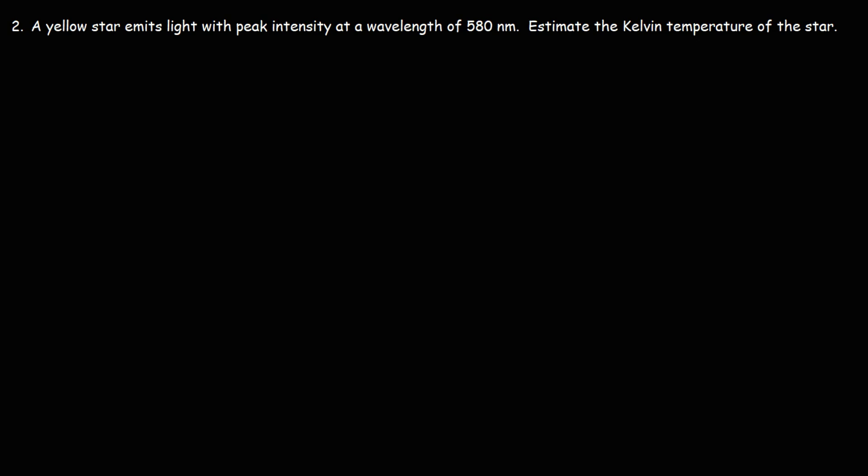Now, let's move on to the next problem. A yellow star emits light with peak intensity at a wavelength of 580 nanometers. Estimate the Kelvin temperature of the star. If you have a telescope and you look at a star, when you look at the color of the star, you can get an idea of how hot the surface of the star is using Wien's law. Yellow, if I remember correctly, is about 560 to 595 nanometers in wavelength. When you look at the color of a star and use the visible light spectrum to identify its wavelength, you can use Wien's law to estimate the surface temperature of that star.